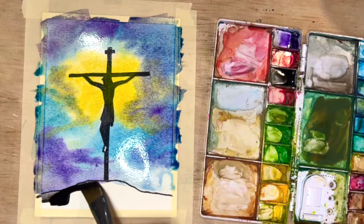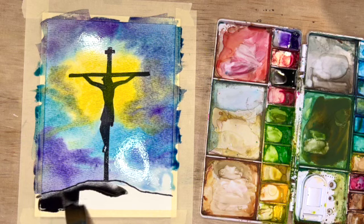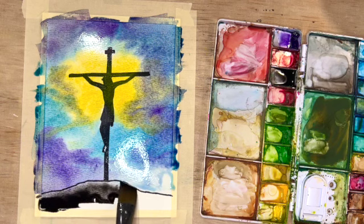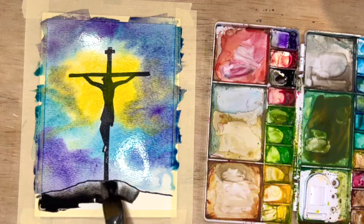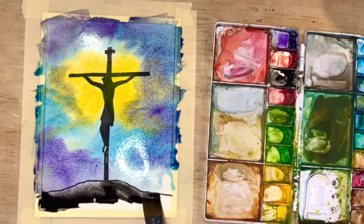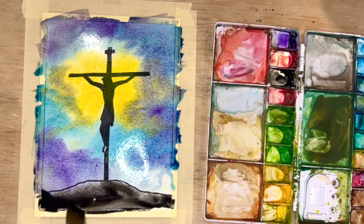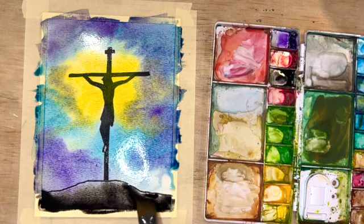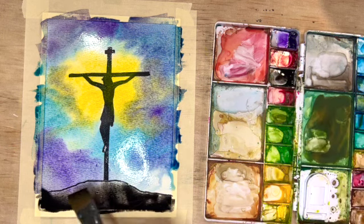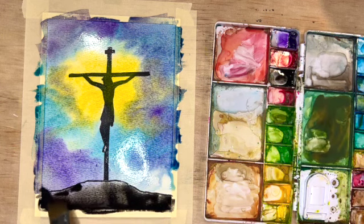Next I'm using black and I'm going along the bottom of my paper. This time this is not wet with water. I'm just going in with the paint because I want it to be nice and dark. And you can see that the sky is kind of bleeding into my ground but I don't mind. It makes it a little bit more interesting. So I'm just trying to fill that in with a lot of paint.